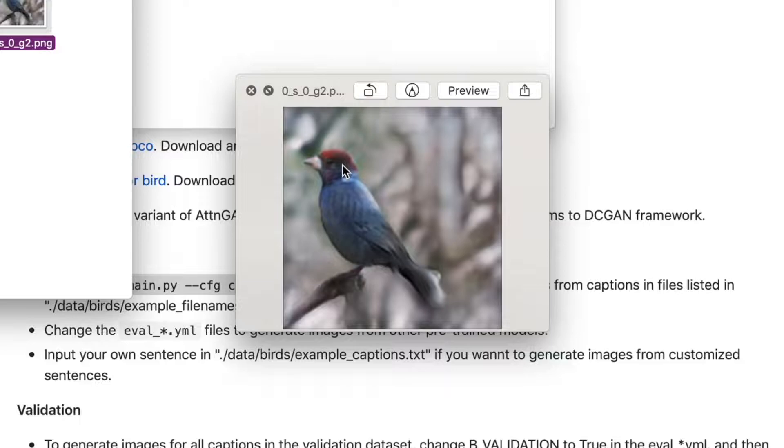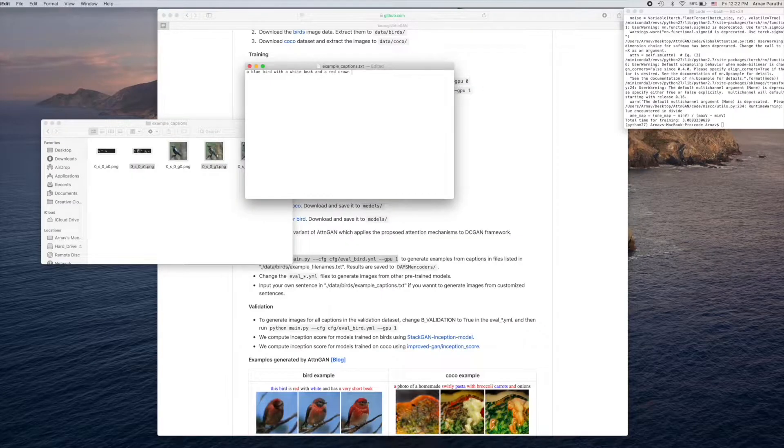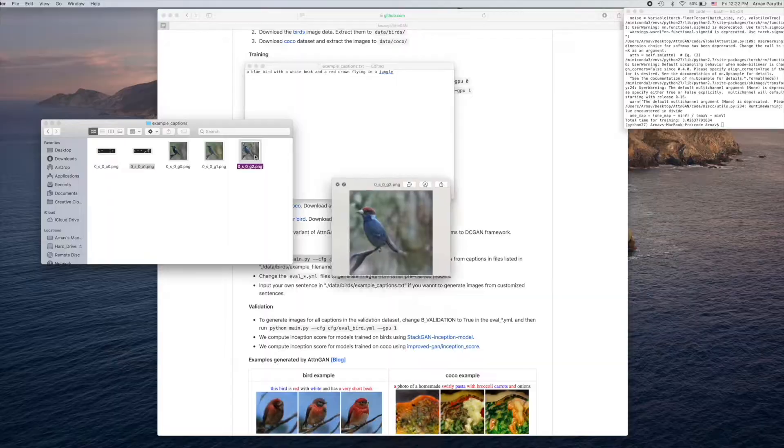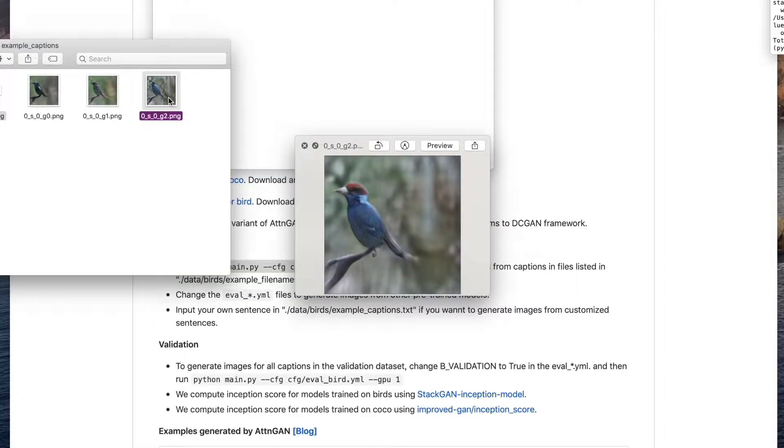A blue bird with a white beak and a red crown. Wow. Okay. A white beak and a red crown flying in a jungle. How is that a flying bird?